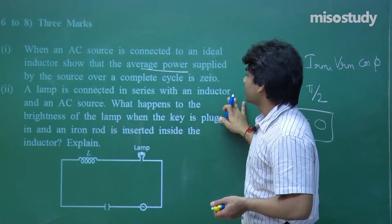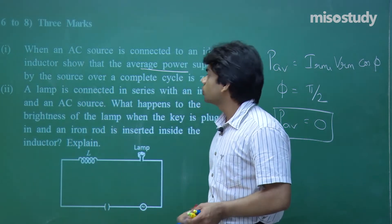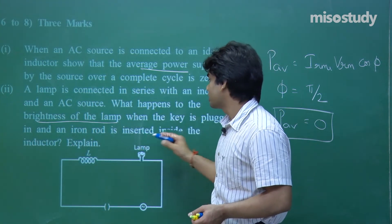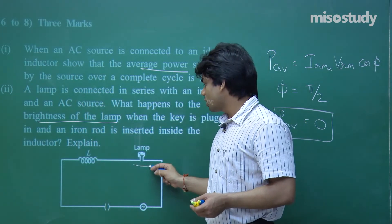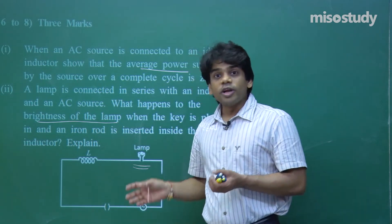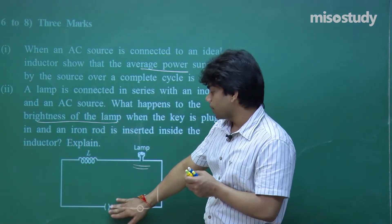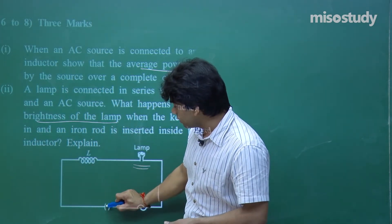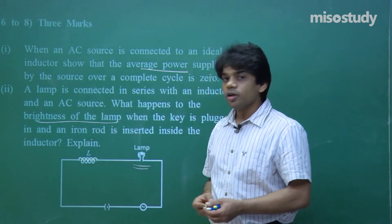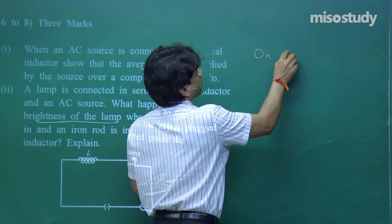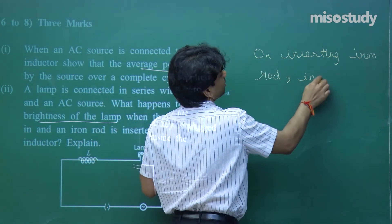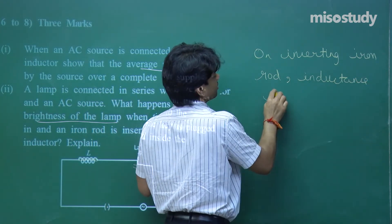Next: a lamp is connected in series with an inductor and an AC source. What happens to the brightness of the lamp when the key is plugged in and an iron rod is inserted inside the inductor? On inserting an iron rod, inductance increases. When inductance increases, the voltage across the inductor V = I·χL = I·ωL increases.